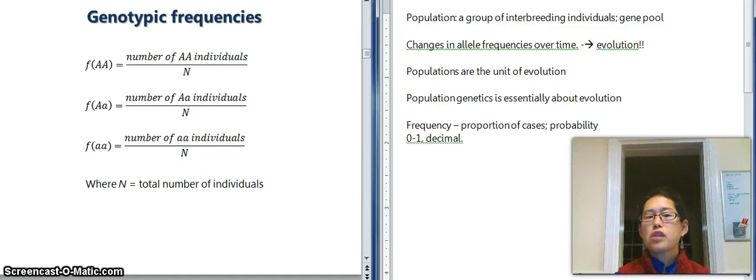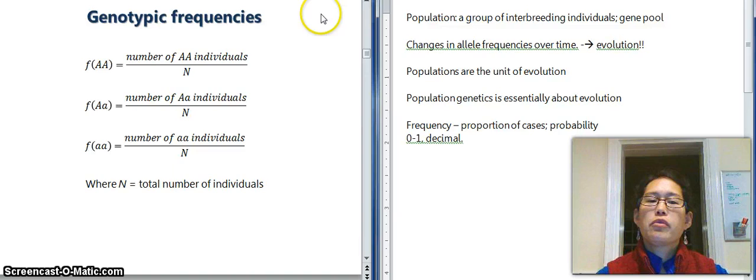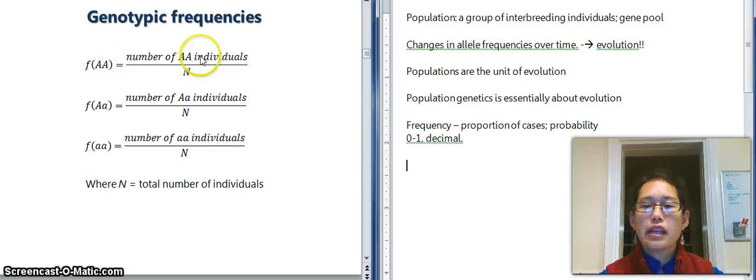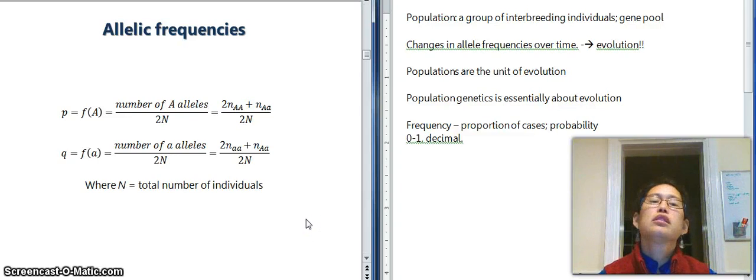Okay, so when we're talking about genotypic frequencies, for example, we've got our frequency. This is what the F means is frequency. Big A, big A is literally the number of big A, big A individuals in the population divided by the size of the population. It's a proportion. It's a percentage. It's a probability. Same for big A, little a. Same for little a, little a. All right, so that's where genotypic frequencies come from. That's how they're calculated.